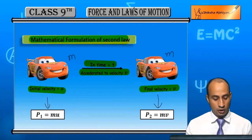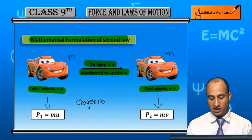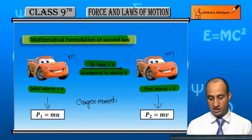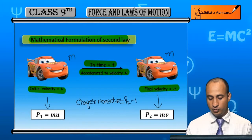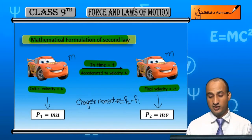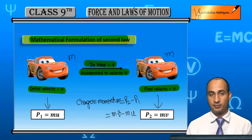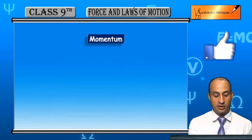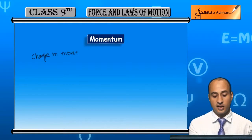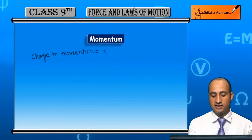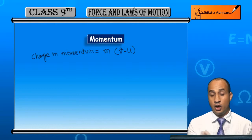Aur jab final velocity v ho gayi, to momentum p2 = mv. To change in momentum kya hoga? Change in momentum = p2 - p1 = mv - mu. Common lete hain to yeh m(v - u) aayega.